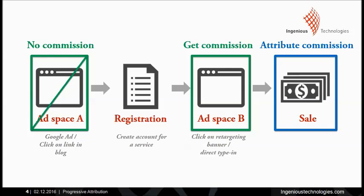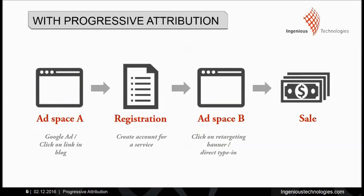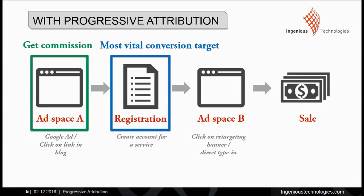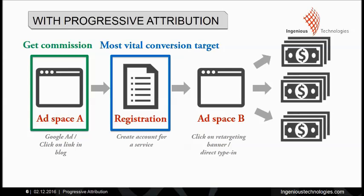Progressive attribution tackles this problem. You apply progressive attribution to the most vital conversion target in the customer journey. When you do this, the sale later on in the customer journey will be attributed to adspace A, the adspace that generated the registration. In fact, all future sales will be attributed to this adspace and it will be granted all commission related to them.